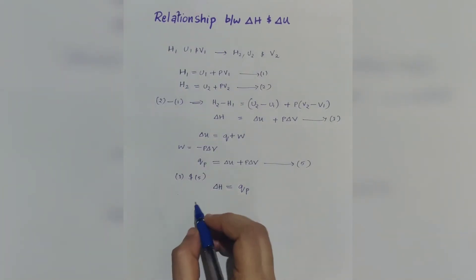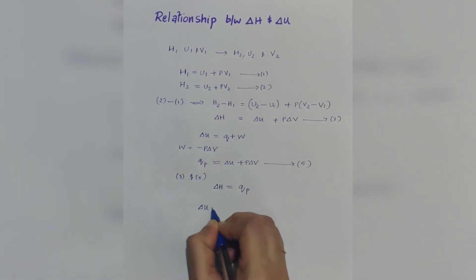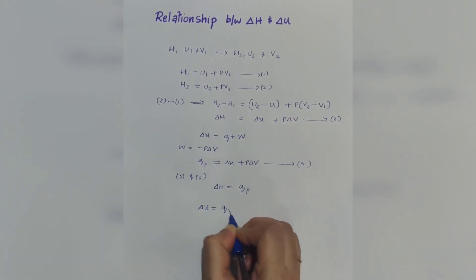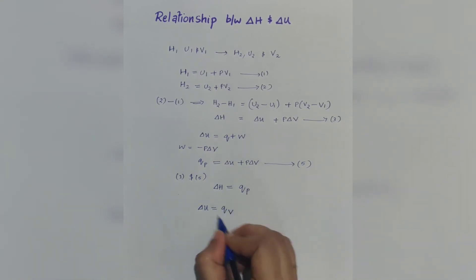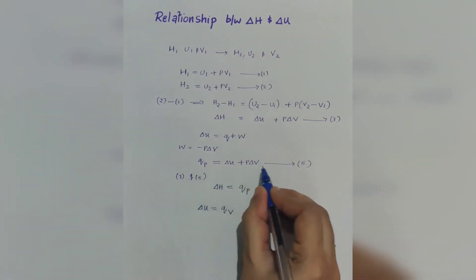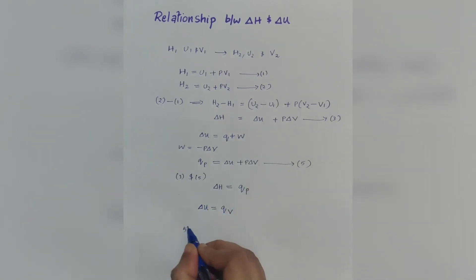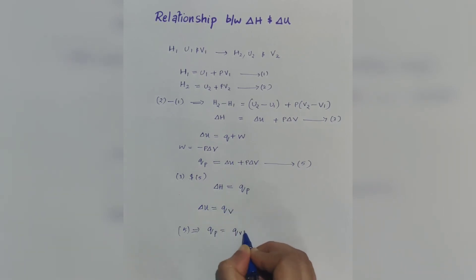One more equation: according to the first law, delta U is equal to QV. That is, the internal energy change equals the heat absorbed or evolved at constant volume. So from equation 5, we can write QP is equal to QV plus P delta V.